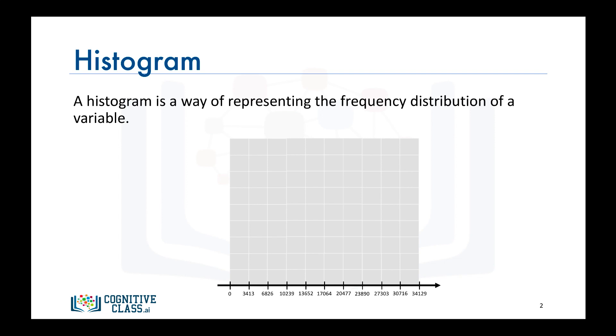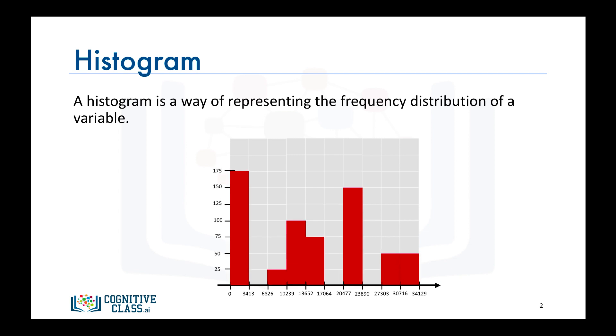Say the number of data points having a value between 0 and 3,413 is 175. Then we draw a bar of that height for this bin. We repeat the same thing for all the other bins. And if no data points fall into a bin, then that bin would have a bar of height 0.